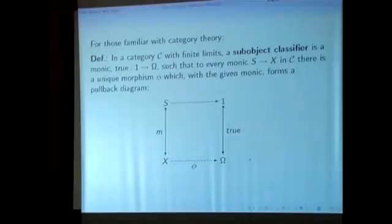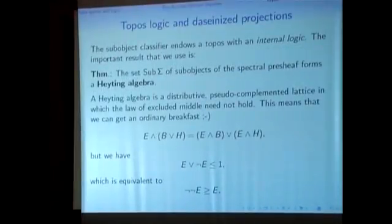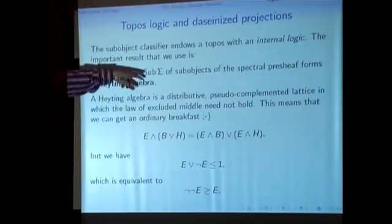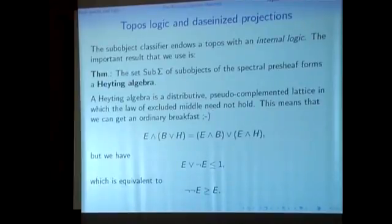It's quite hard to get some intuition how this works, but maybe it becomes a little clearer when we go back to our special case. What can be shown generally, and we only need a very special case, is that the sub-object classifier gives an internal logic to the topos. The topos comes equipped with an internal logic. The important result that we use is that the set of sub-objects of sigma forms a Heyting algebra. Of course, this is only a very special case of what goes on in a topos. This is the part of topos theory that we want to use.